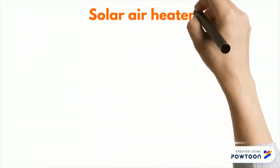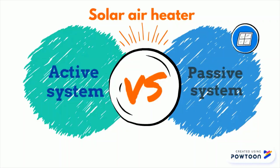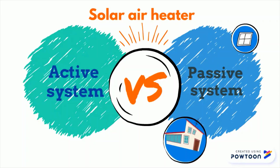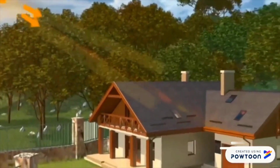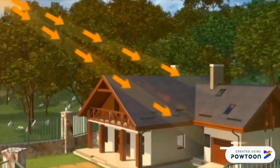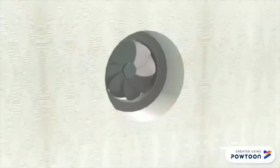A solar air heater is an active system, as opposed to a passive solar system, which relies on heat-absorbing structural materials and building orientation that takes advantage of solar exposure. Active solar systems collect the solar energy with solar panels and use fans to move the energy to a different place.